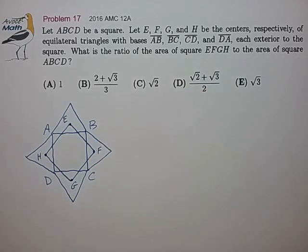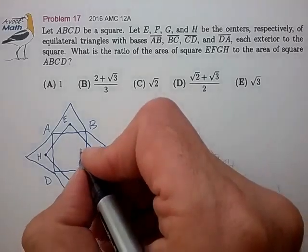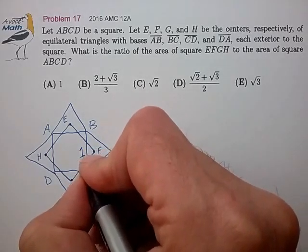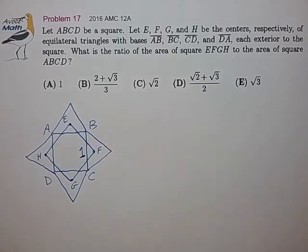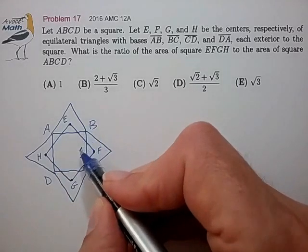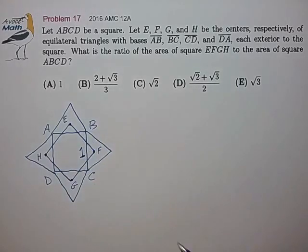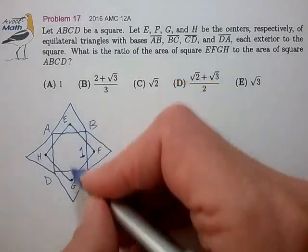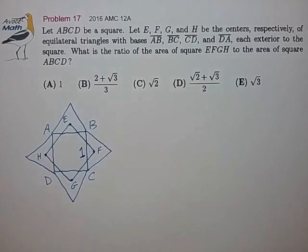Since this is a ratio problem we can select one of these lengths in our drawing for convenience. Let's choose the side length of square ABCD to equal the length one. Now we just have to work out the diagonal of ABCD in terms of that side length, and the diagonal of EFGH in terms of that chosen side length, and that should be pretty straightforward.